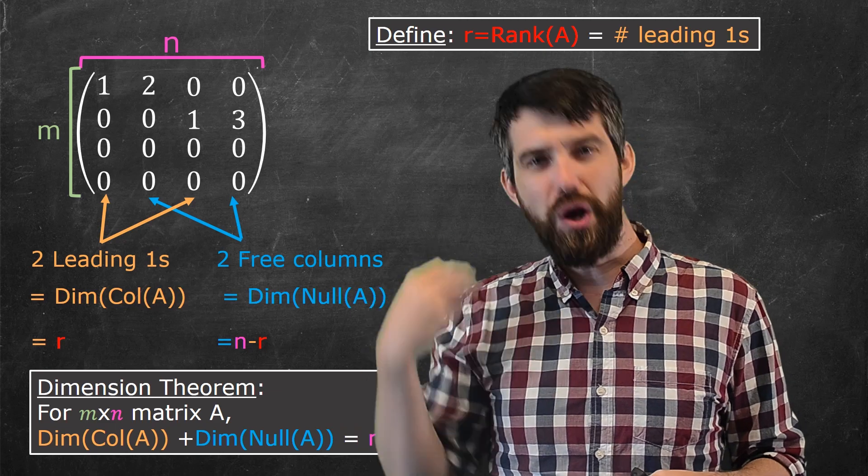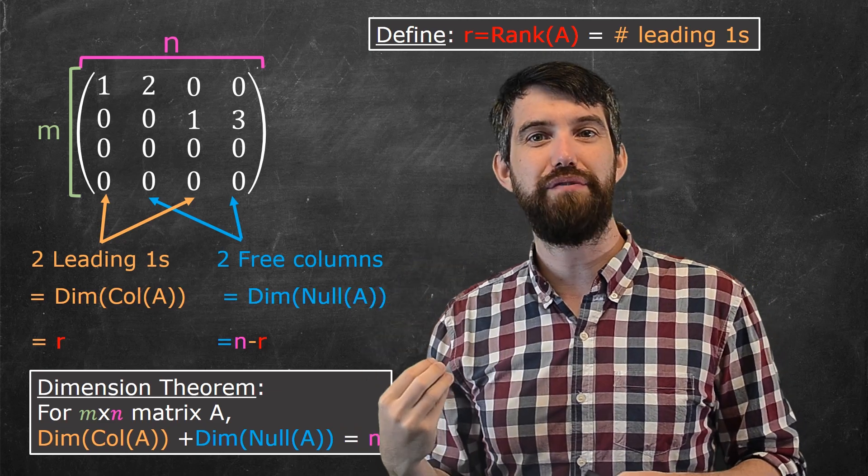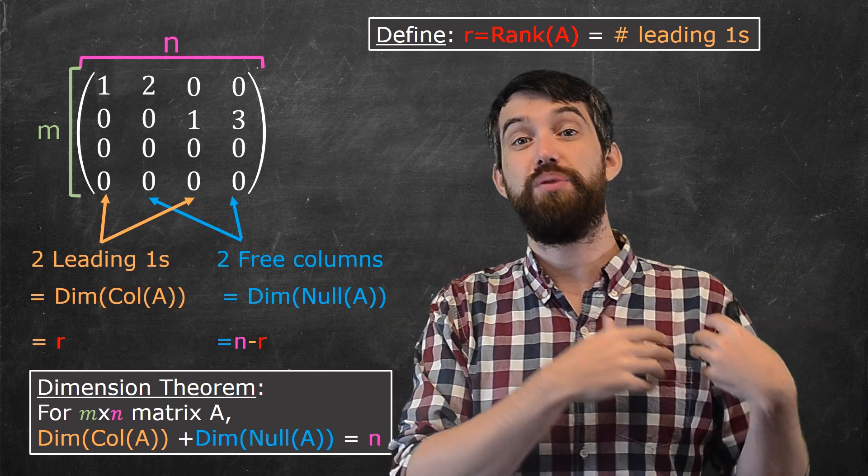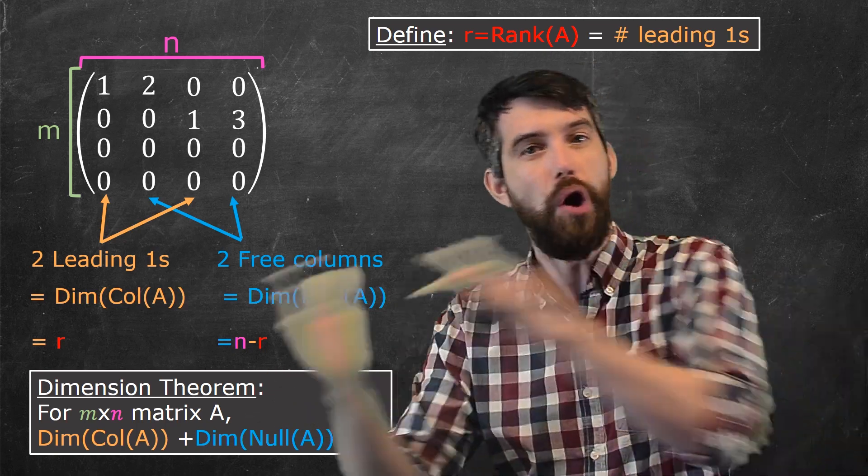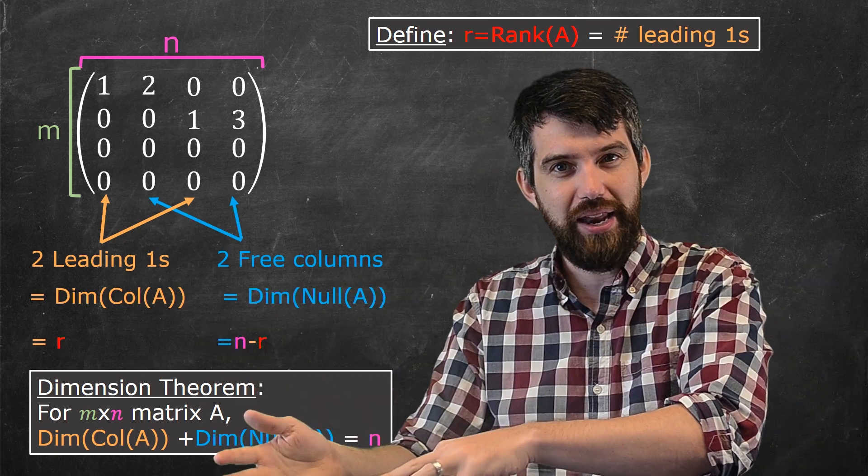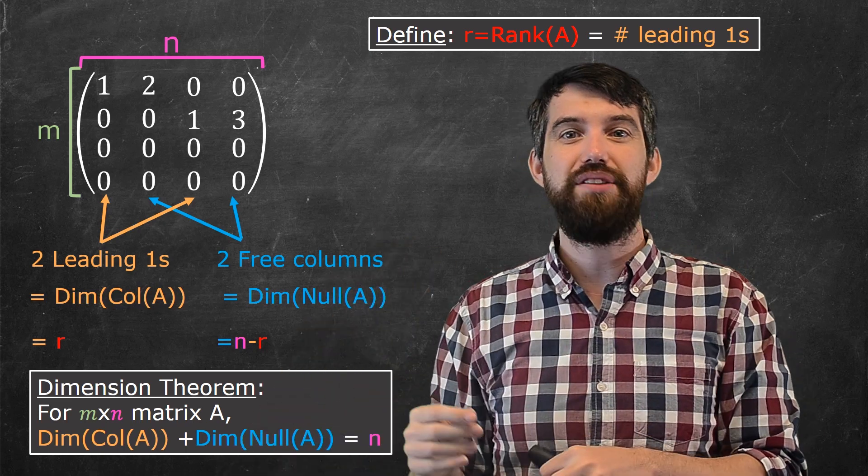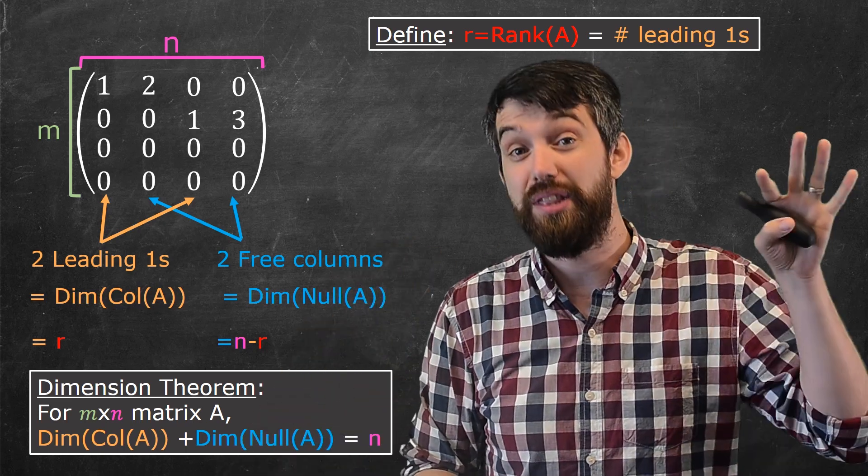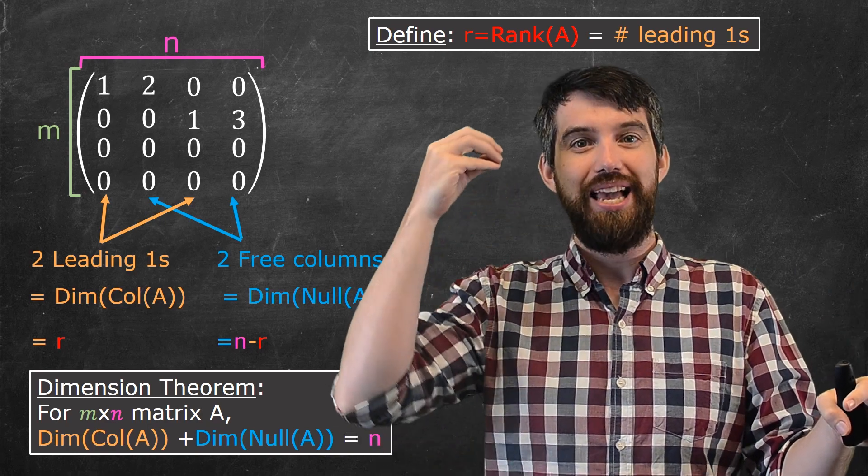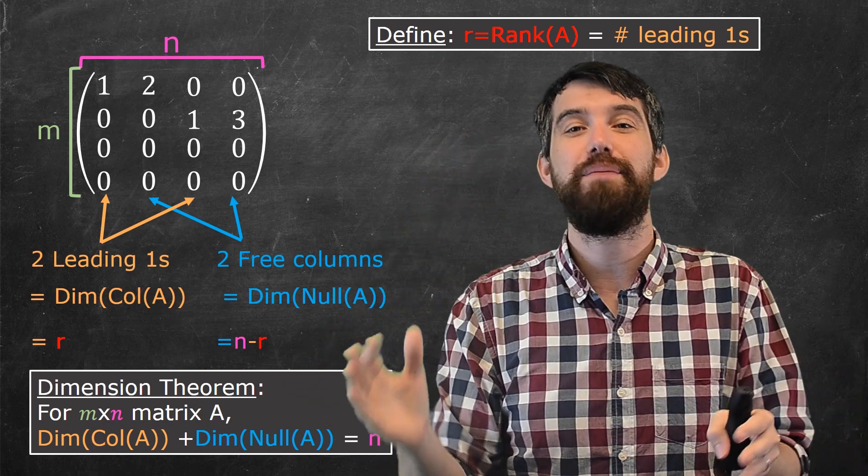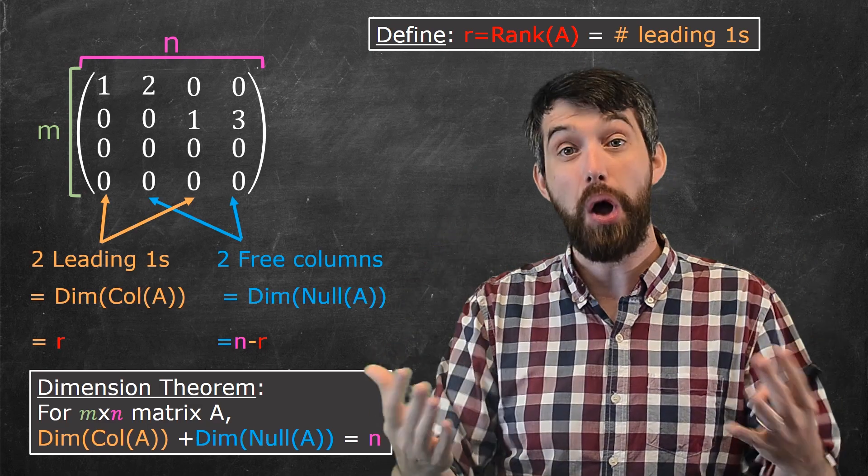Remember, vectors in the null space, those were coming from the domain. They were the vectors in the domain that would get killed off. Vectors in the column space are all the targets, or all the things in the codomain. So it's kind of interesting that you take this subspace, which lives in the domain, you add its dimension to the dimension of this subspace in the codomain, and they add up to n, the number of columns in your matrix.